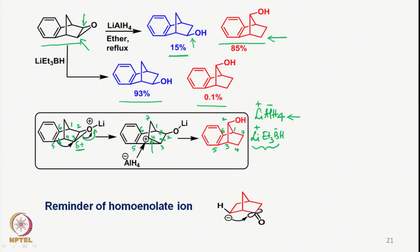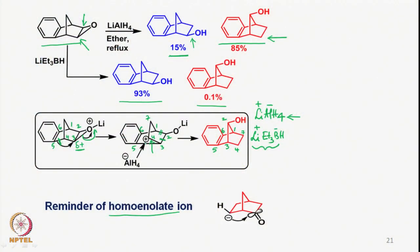This migration of the carbon-carbon bond to this carbon where the epoxide opens should remind you of homoenolate ions, where basically we have a carbonyl group and the negative charge attaches in this fashion. So it is essentially a proper orientation of the orbitals which allows overlap and then migration such that there is a movement of bonds leading to the formation of a cation in a slightly different way.